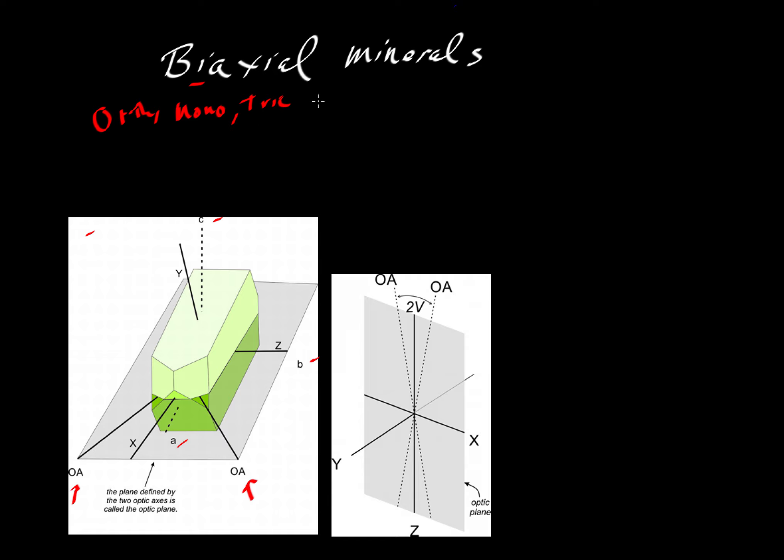So all these systems here have the case where they have unequal A, B, and C axes. So these are of unequal length when we're measuring out, for example, distance to crystal faces or distance to atoms or atomic clusters.